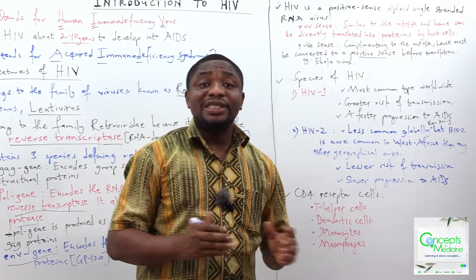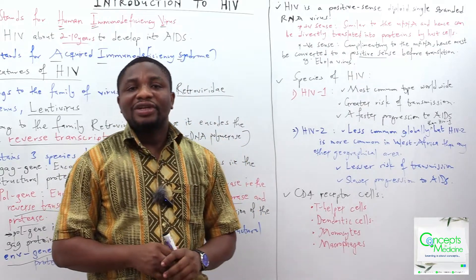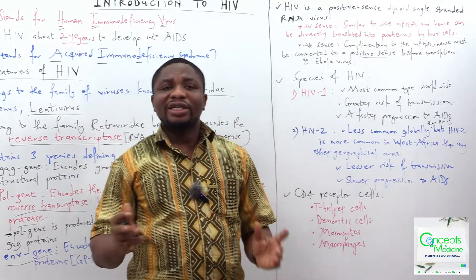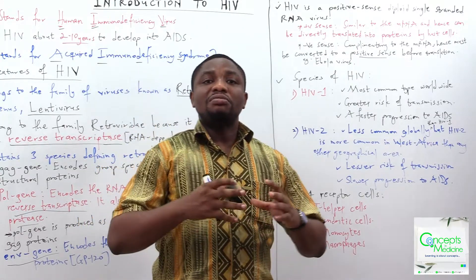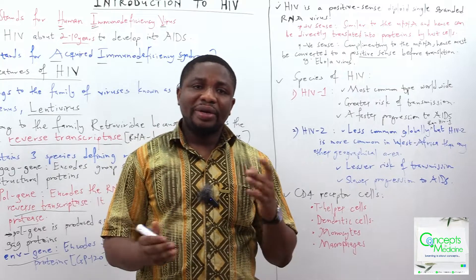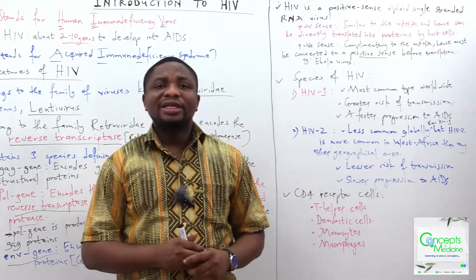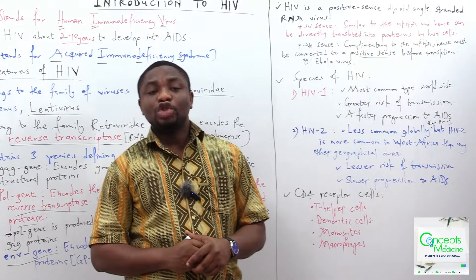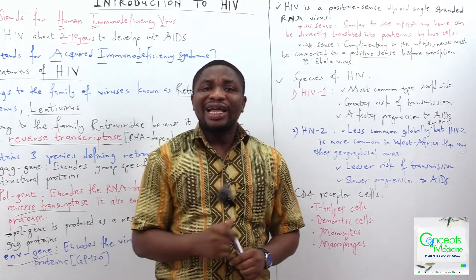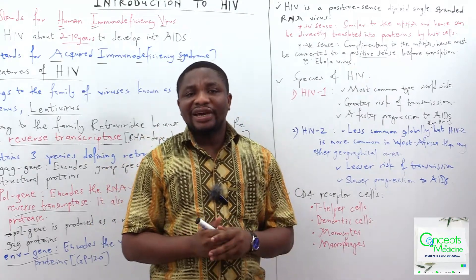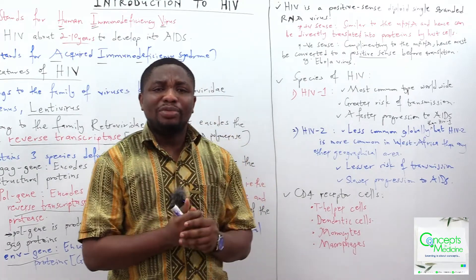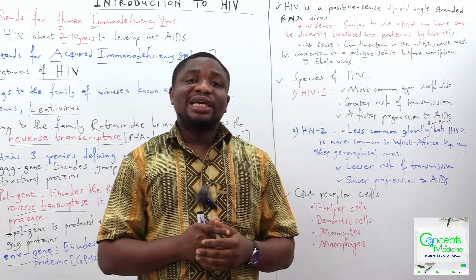Let's look at the species of HIV. There are two: HIV 1 and HIV 2. HIV 1 is more common globally — worldwide, it is the most common species of HIV compared to HIV 2. HIV 1 also has a greater risk of transmission and a faster progression to AIDS compared to HIV 2.